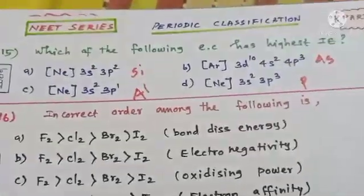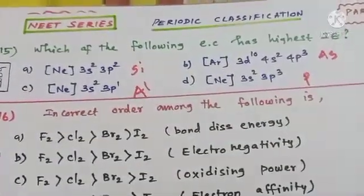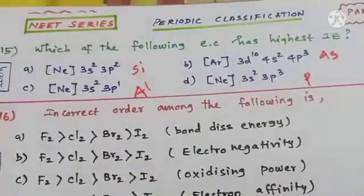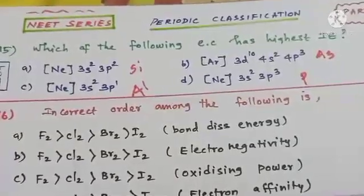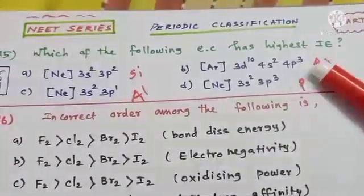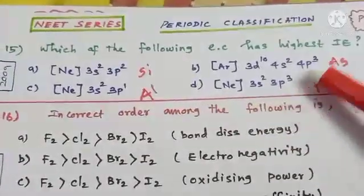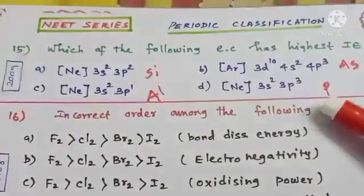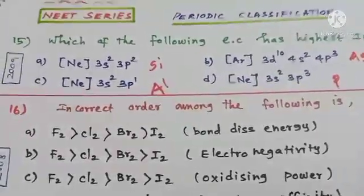Among these four electronic configurations, options B and D have a stable half-filled configuration. In option B you have 4p³, and in option D you have 3p³ — both are stable half-filled configurations.